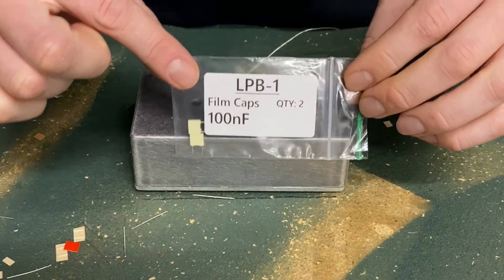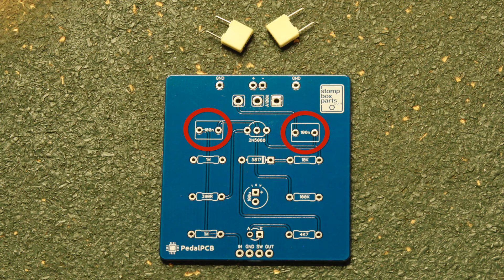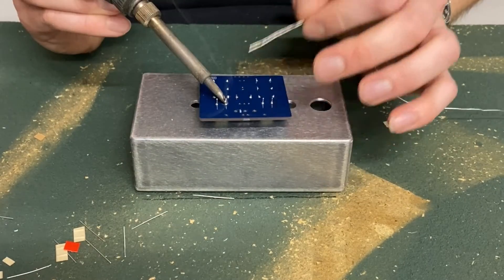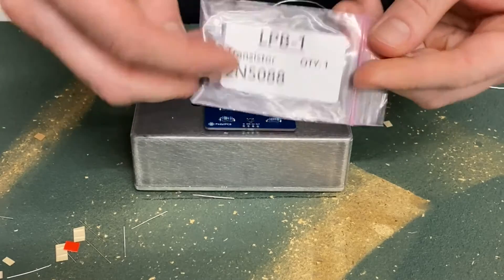Next, find the 100N film caps. They will go here on the board. These capacitors have no polarity and it does not matter which direction you solder them in.